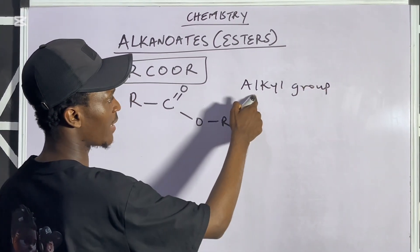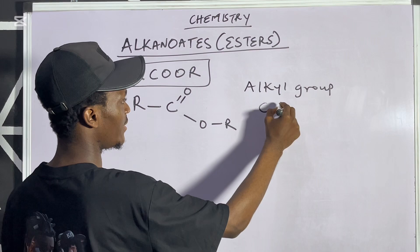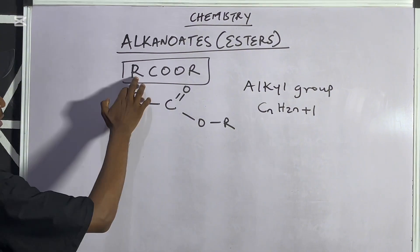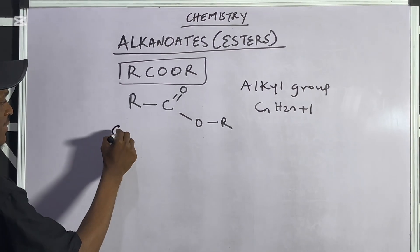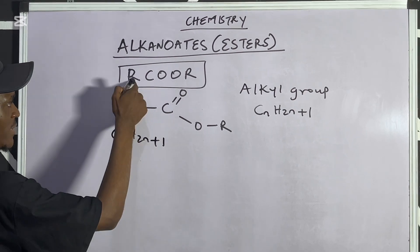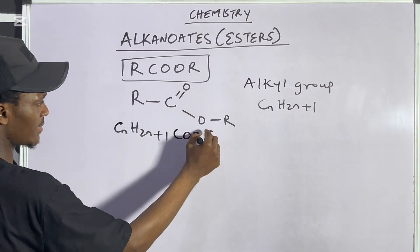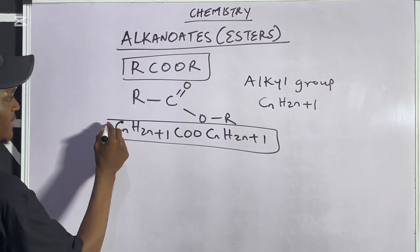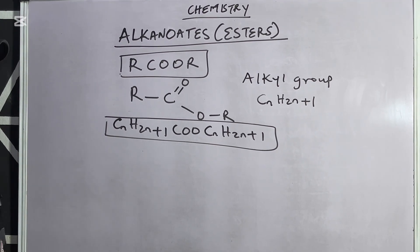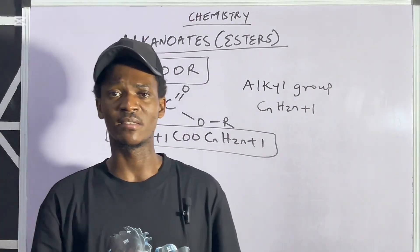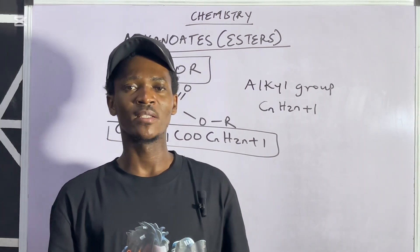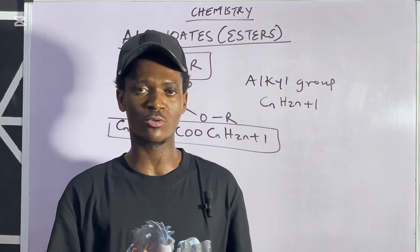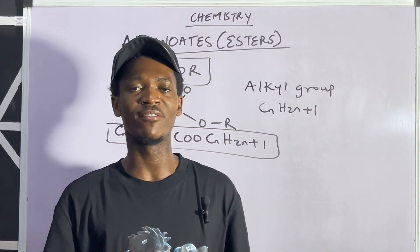The general formula of the alkyl groups is CₙH₂ₙ₊₁, so I can replace the R's here with CₙH₂ₙ₊₁ for the first group, then COO, then CₙH₂ₙ₊₁ for the second. That's the general formula of the alkanoids. One very important thing to note about the alkanoids is that they are a class of organic compounds characterized by the odor of fruits — meaning they are known to have a fruity smell.